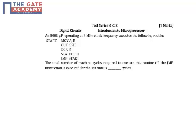The given problem is asking how many total machine cycles are required to execute the above program. The first instruction is MOV A, B — the total number of machine cycles is 1. For OUT, the total is 3. For DCR (decrement), the total is 1. For STA, the total number of machine cycles required is 4. And for the last one, JMP, the total number of machine cycles required is 3.